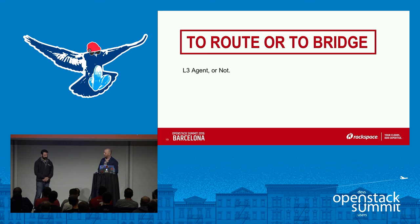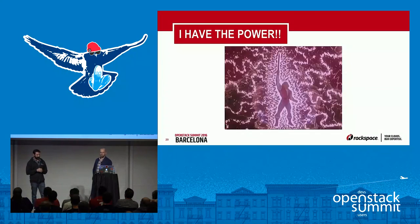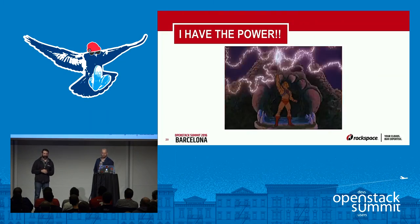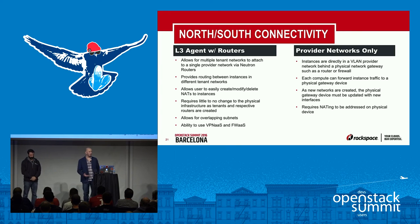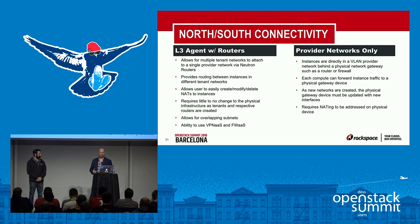The next migration we performed was the decision between using the L3 agent or not — putting instances behind routers versus directly behind some type of physical network device. The benefit of having the L3 agent is that it gives power to the user: they can create routers, create floating IPs, and manipulate those floating IPs as needed. With VXLan tenant networks, those networks are effectively isolated and not terminated on a physical network device — the Neutron router is where you connect to the VXLan network to provide inbound and outbound connectivity.